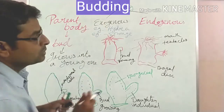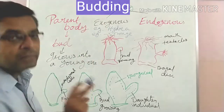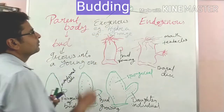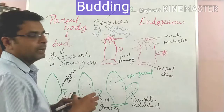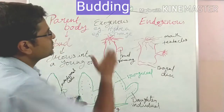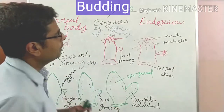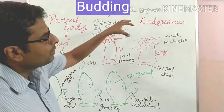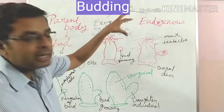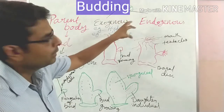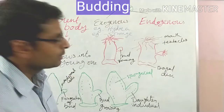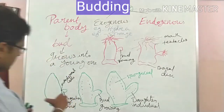There are two types of bud formation: exogenous budding and endogenous budding. In exogenous budding, the parent cell produces the bud on the surface of the body. In endogenous budding, the buds are formed inside the parent body.